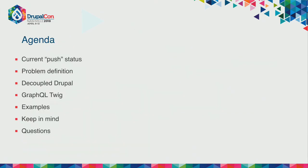The agenda for today is: first, we'll discuss the current push status in Drupal 8 and how the data flow works. Then we'll define a problem that we, as front-enders, usually face. Then we'll talk about decoupling Drupal, about GraphQL as a core module, and then about GraphQL in Twig. We will show two examples — one will be a gallery with simple images, and one will be a simple block. At the end, we'll talk about the benefits and the things we need to keep in mind while using this module.